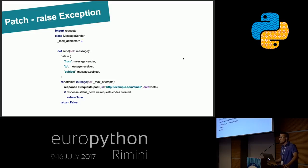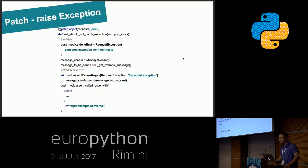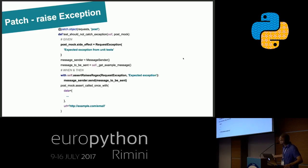We already know how to patch or mock the post method. Now let's talk about how to make it raise an exception and check if that exception was raised. We can do this simply with a patch by assigning an exception to the side_effect attribute. Then in the test we can check if the exception was raised.